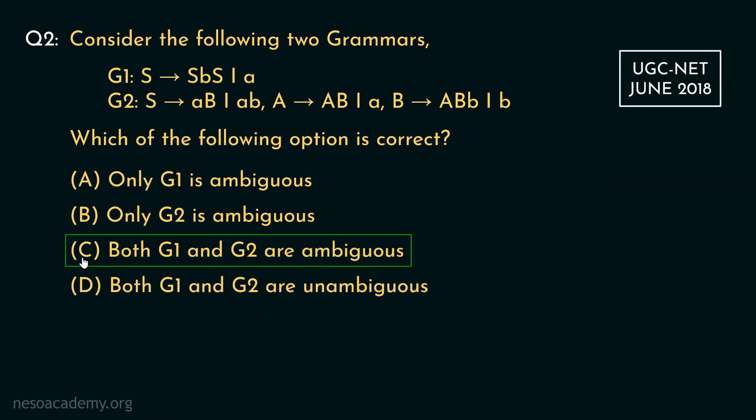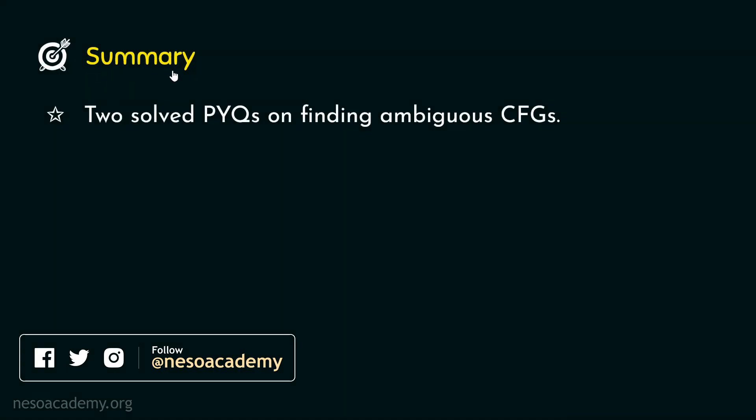Therefore, the option C, that is both G1 and G2 are ambiguous, is the correct choice. So in this session we observed two solved previous year questions on finding the ambiguous CFGs. Alright people, that will be all for this session. In the next session we will observe another set of solved problems. So I hope to see you in the next one. Thank you all for watching.